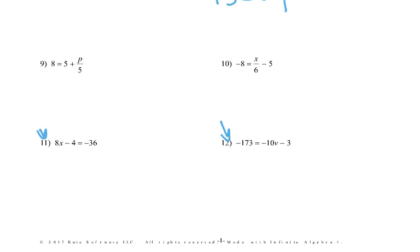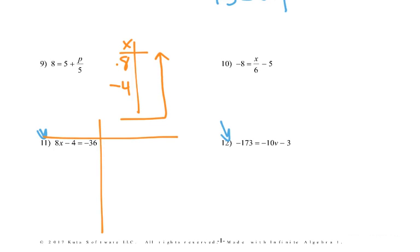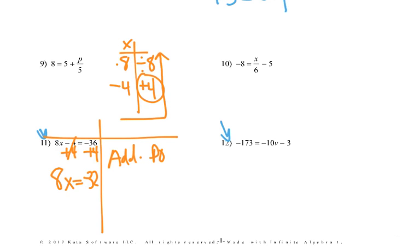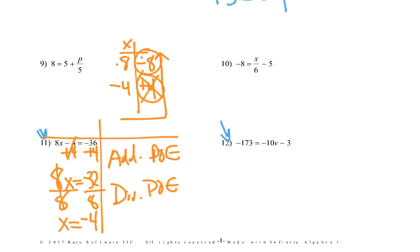Number 11: what's happening to X? First times by 8, then subtract 4. We're solving in reverse: opposite of minus 4 is adding 4. I add 4 to both sides — addition property of equality. That becomes 0, leaving 8X equals negative 32. Then divide both sides by 8 — division property of equality. Negative 32 divided by 8 is negative 4. X equals negative 4. We've created the simplest equivalent equation.